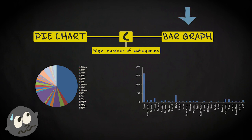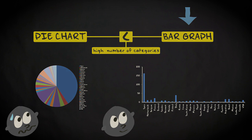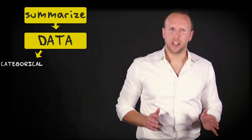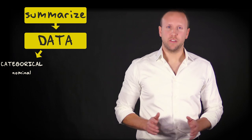This graph contains a lot of information as well. Yet I would argue that it is much better digestible than the two colorful pie charts you saw before. Up till now we have talked about a categorical, or more precisely, a nominal variable.